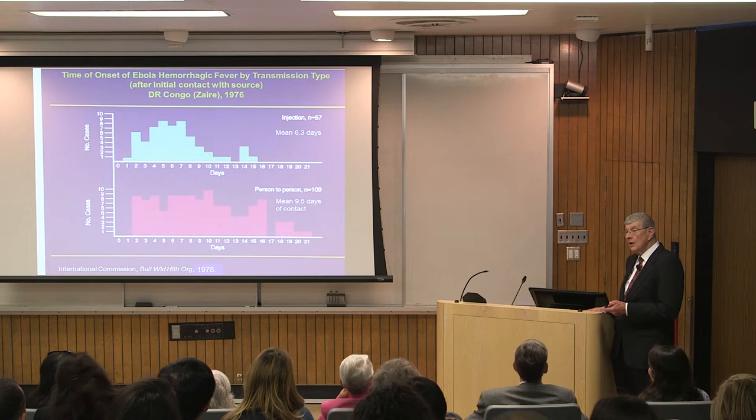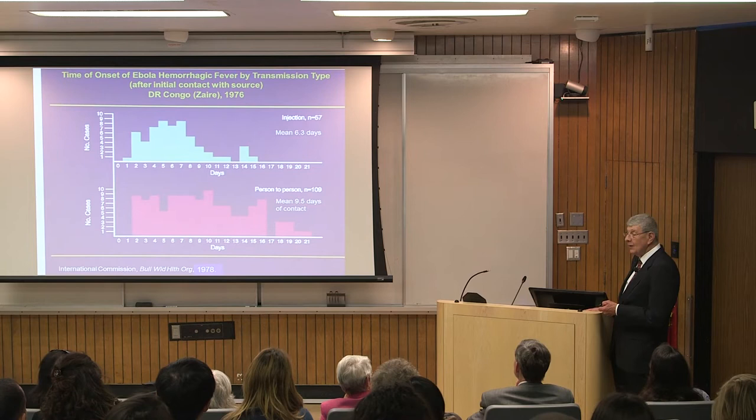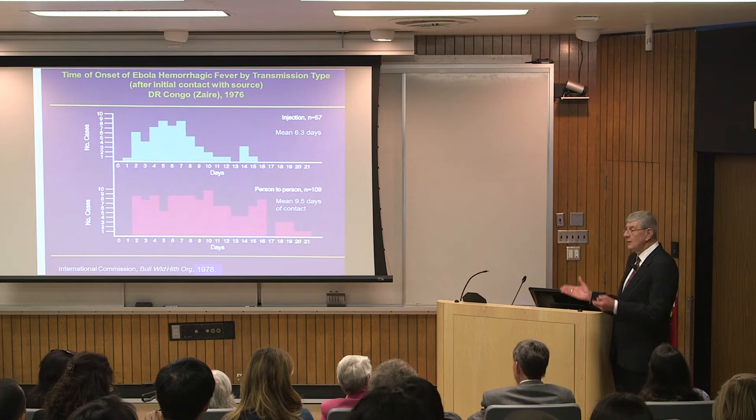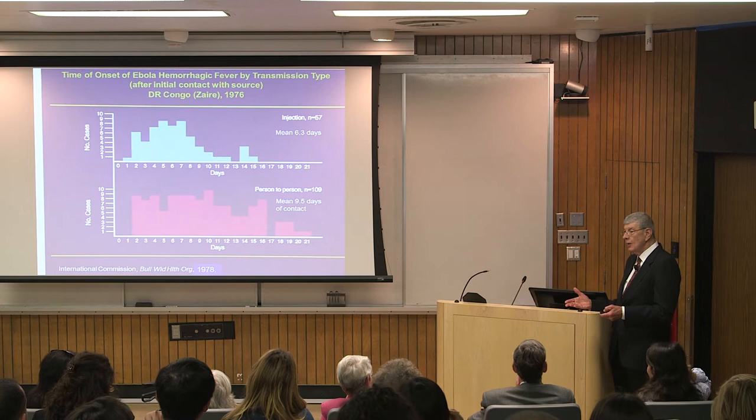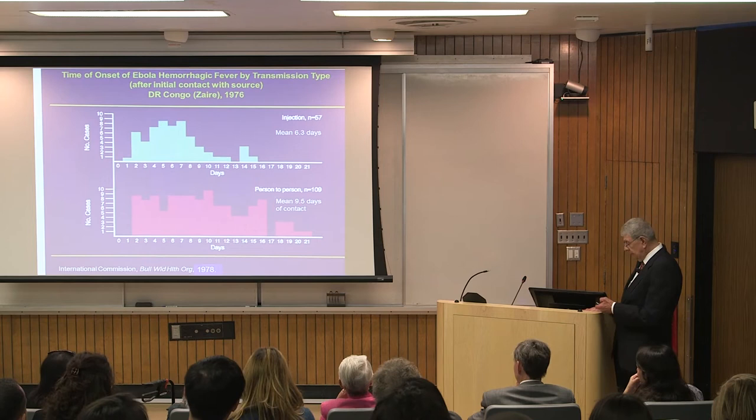If you're wondering where the 21-day period comes from for declaring a patient free of disease — it's still used from the very first outbreak. And 42 days is for an area, which is twice the known incubation period, where quarantine or isolation is levied.